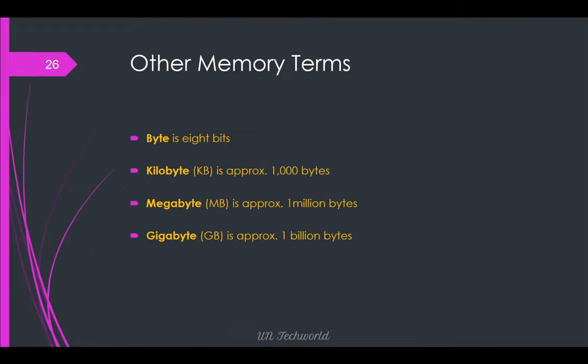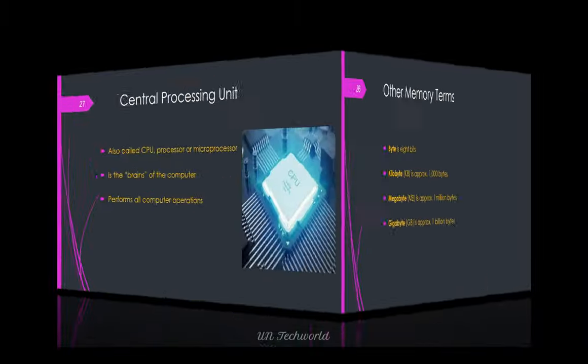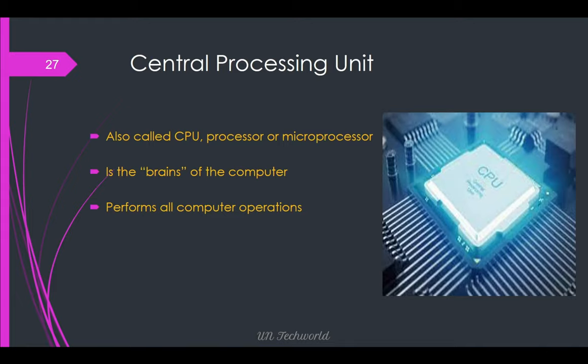Other memory terms: a byte is 8 bits. A kilobyte is approximately 1,000 bytes. A megabyte is approximately 1 million bytes. A gigabyte is approximately 1 billion bytes.